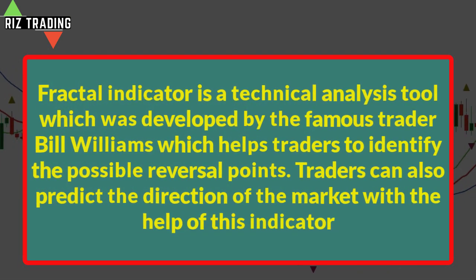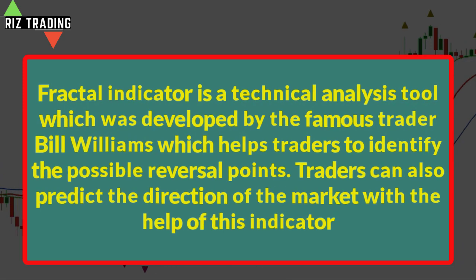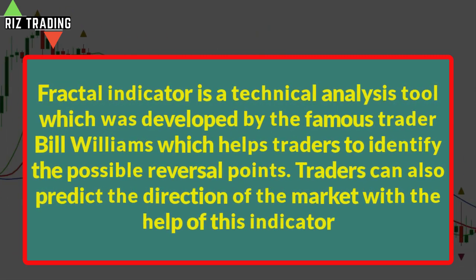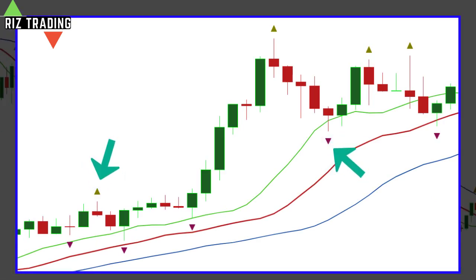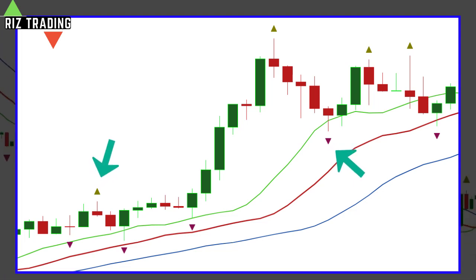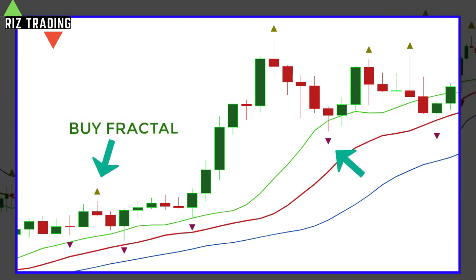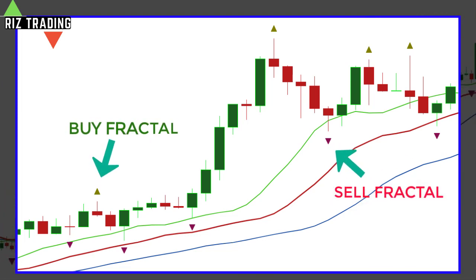The Fractal Indicator is a technical analysis tool which was developed by the famous trader Bill Williams, which helps traders to identify possible reversal points. Traders can also predict the direction of the market with the help of this indicator. There are small arrows in this indicator which appear above or below the third candle if that candle is the highest or lowest of the last five bars. There are two types of arrows or fractals: the upper arrow is called buy fractal and it acts like a resistance level, and the lower arrow is called sell fractal and it acts like a support level.